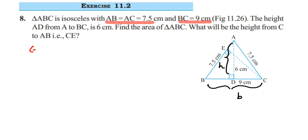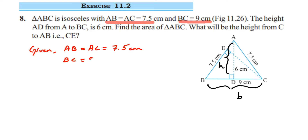Let's see what is given in the question. AB is equal to AC, both equal to 7.5 cm. They have given the height AD and BC which is 9 cm, and AD is equal to 6 cm.